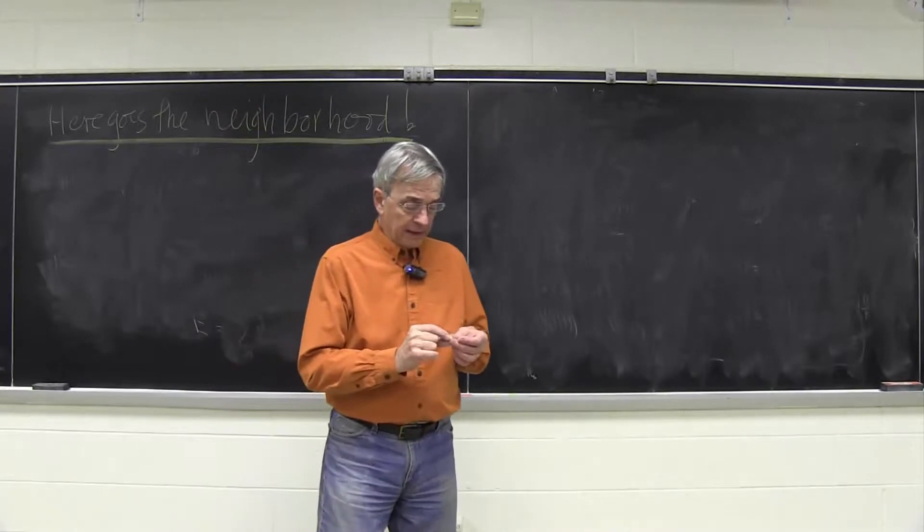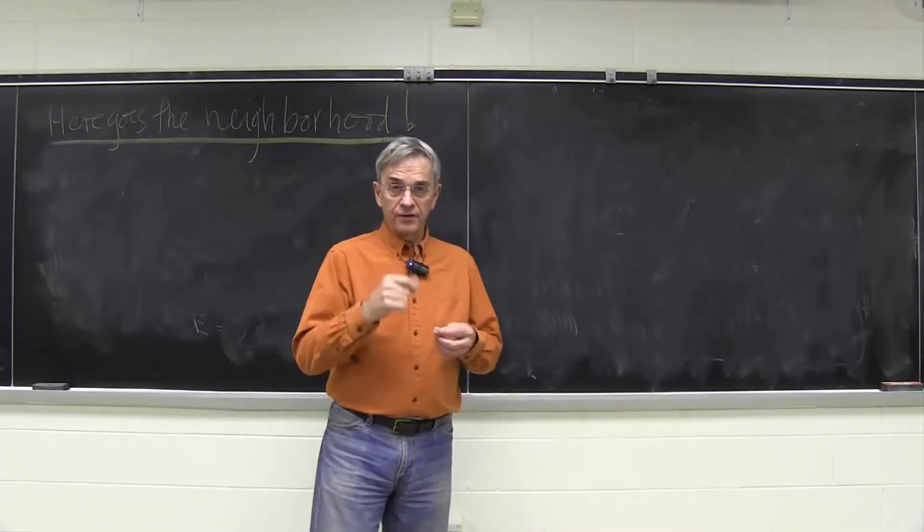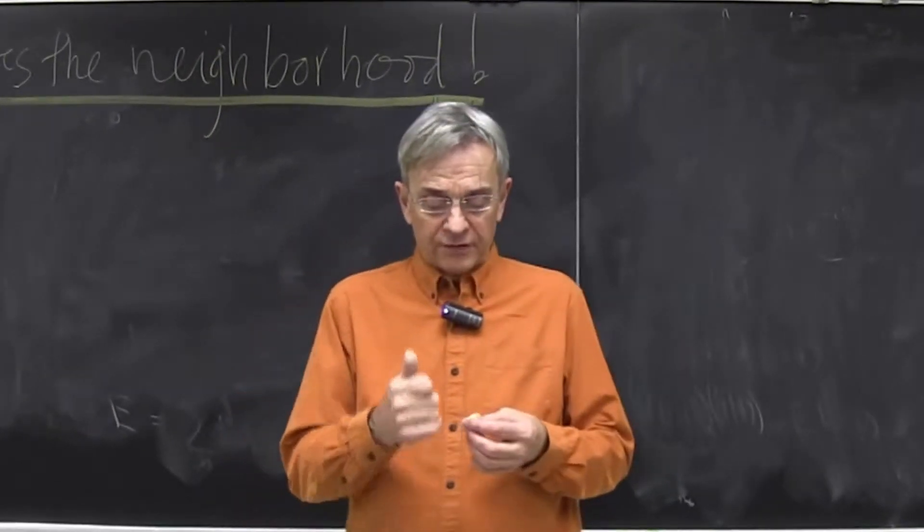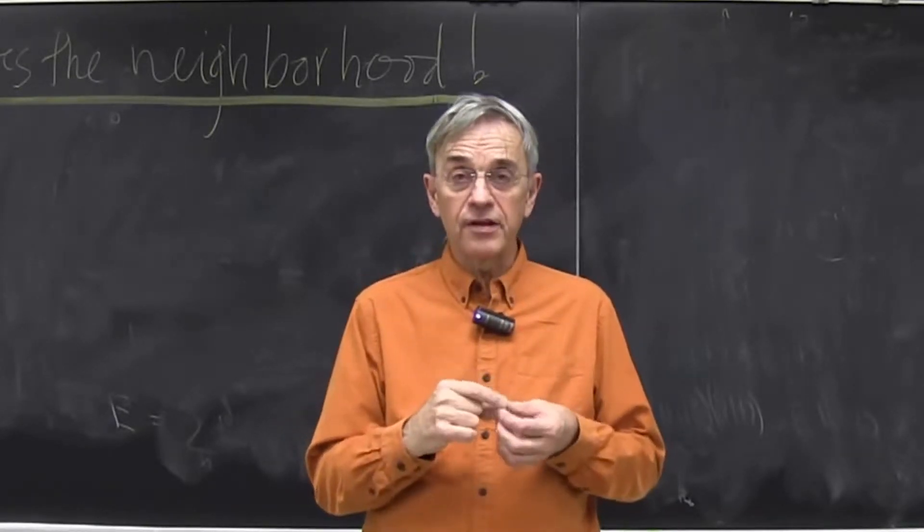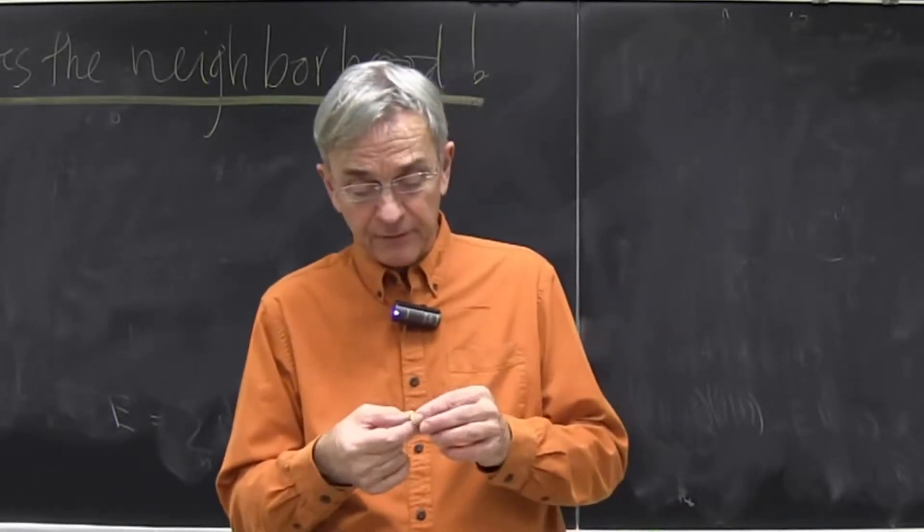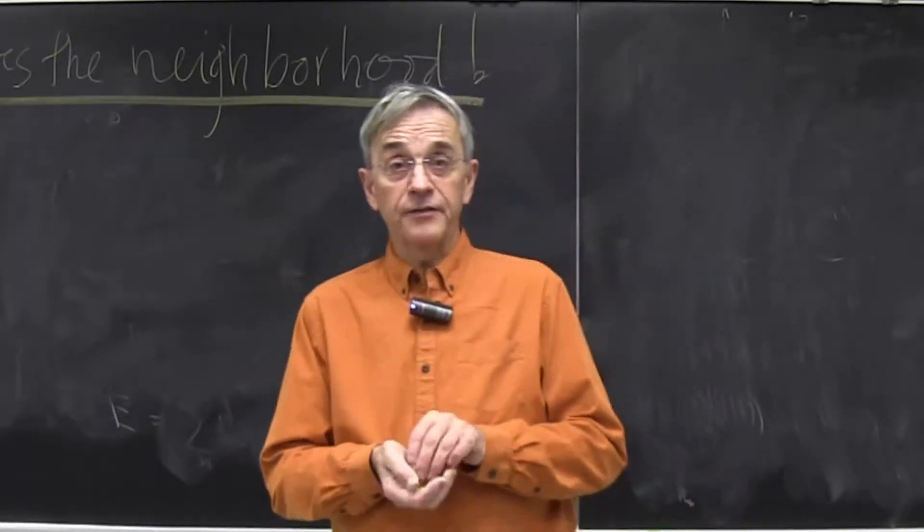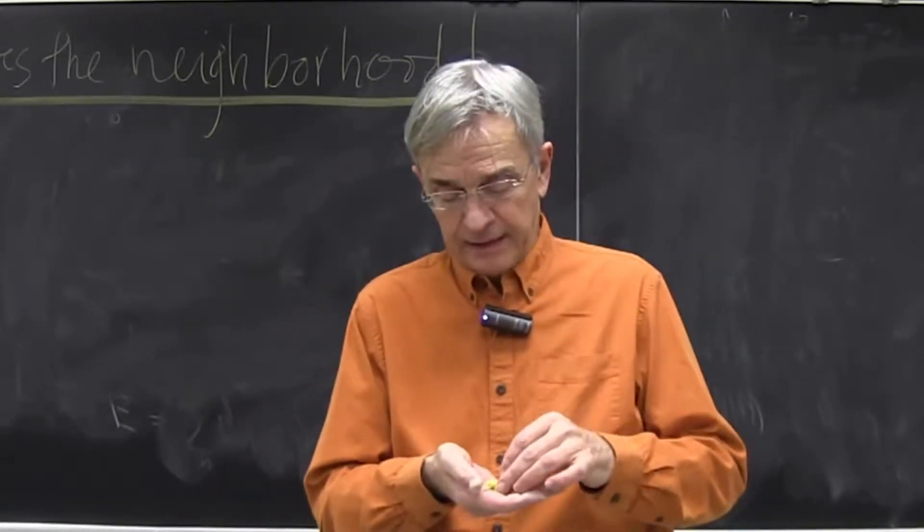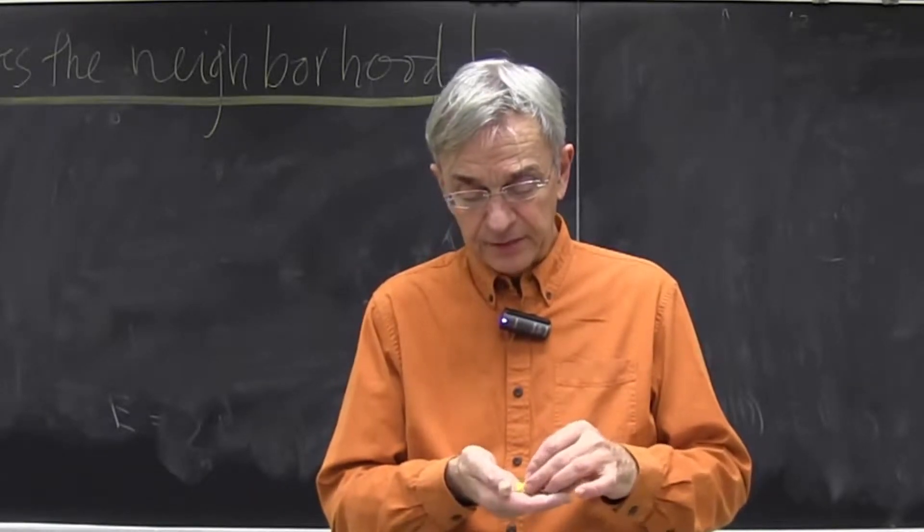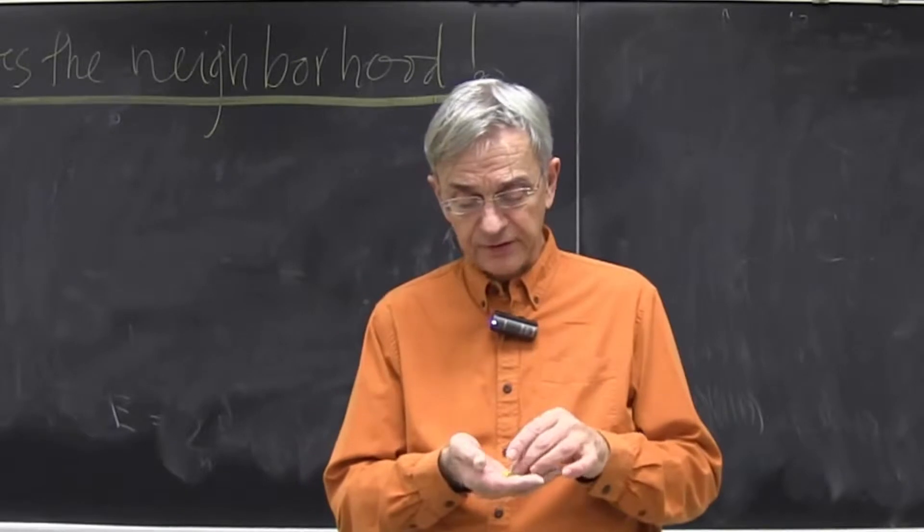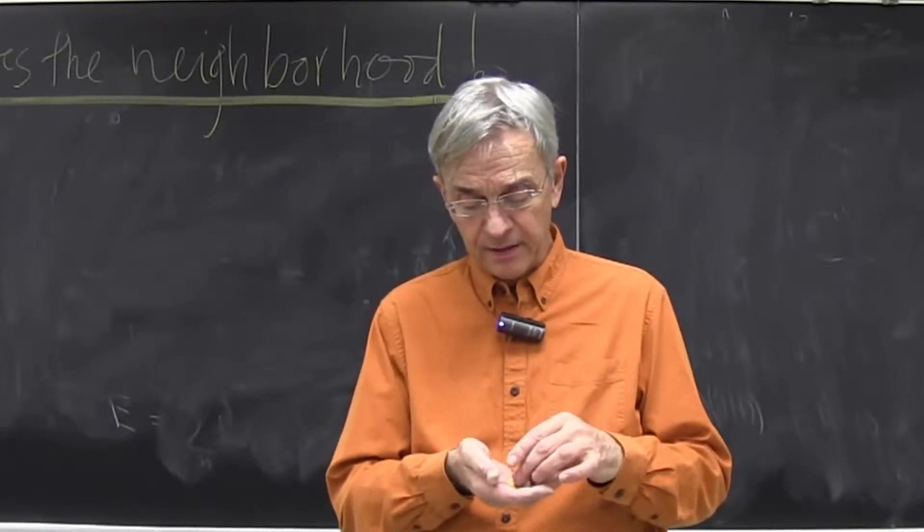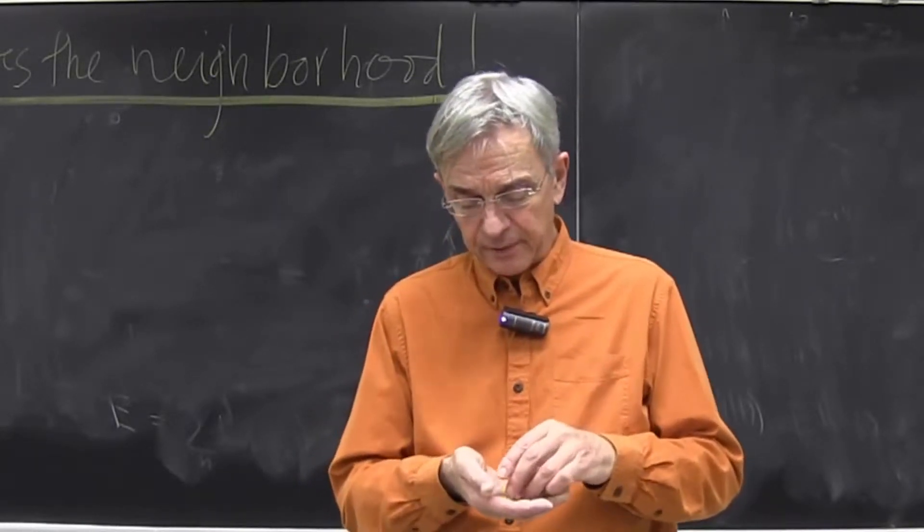By going from studying what happens to one initial state to studying what happens to a distribution of initial states, we're doing something very physical, which is to say that we never know any state with infinite precision. Mathematicians might know it sometimes, but in science, applied dynamical systems, there's always some uncertainty about initial states.